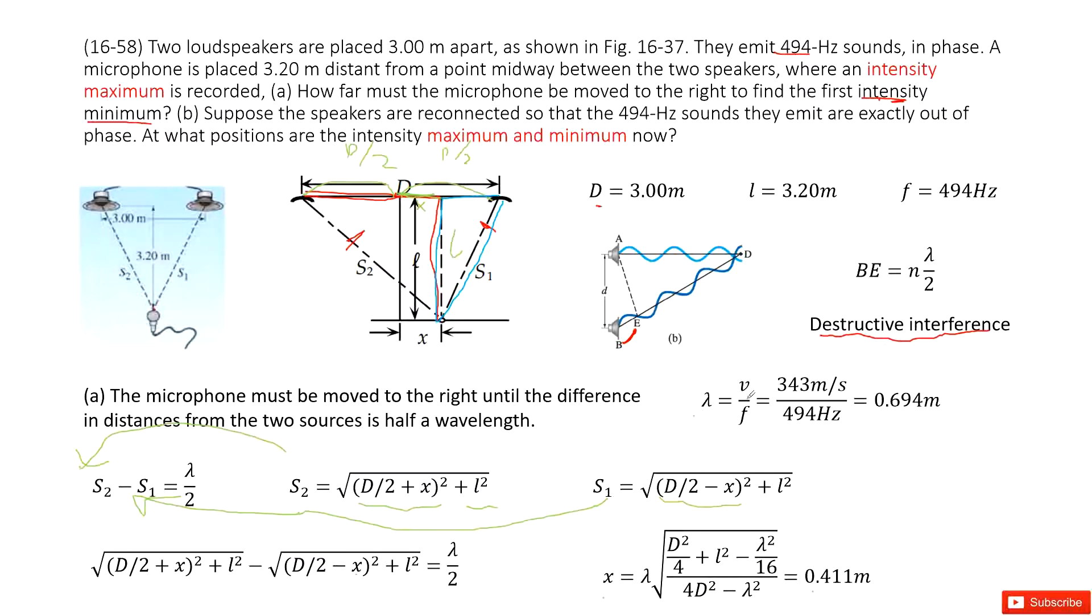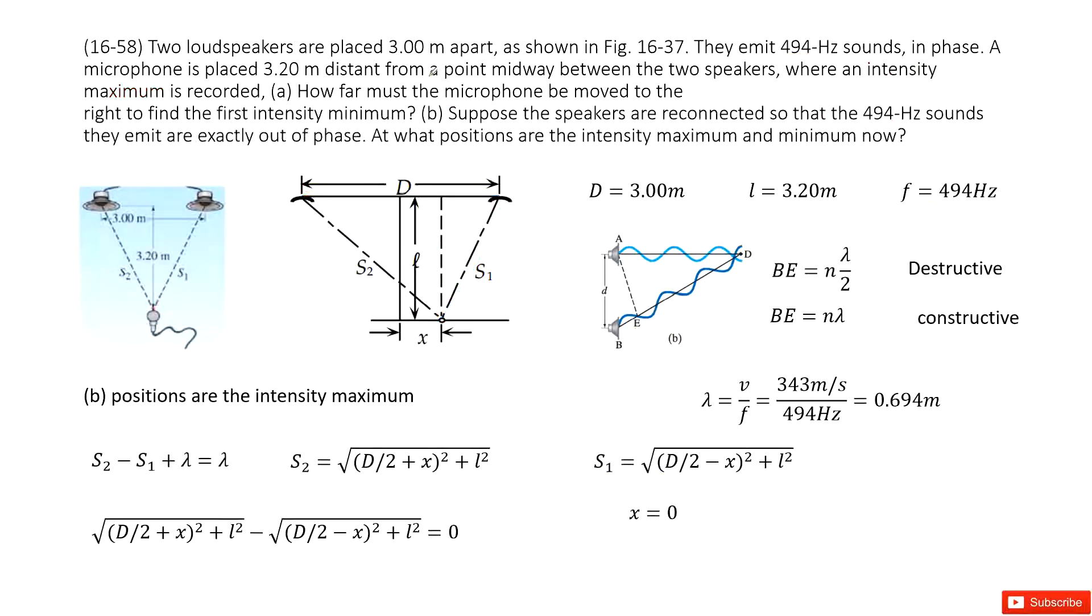Now next question. How do you find lambda? Lambda, we can use V over F. V is 343 meter per second divided by frequency is given there. So the first part is solved.